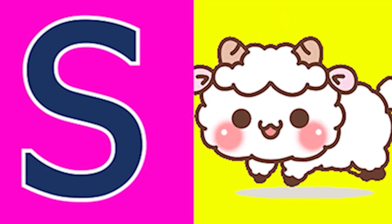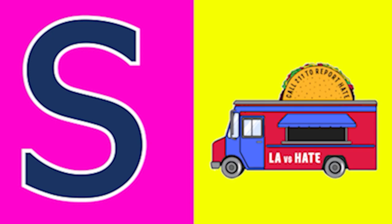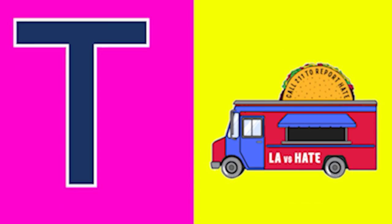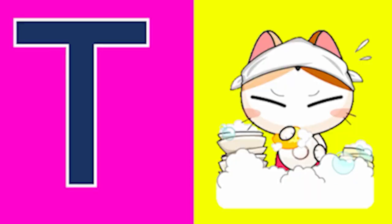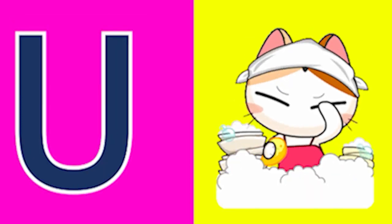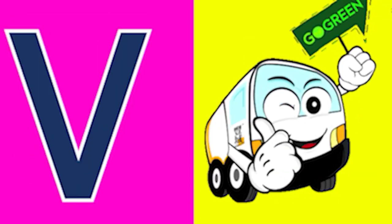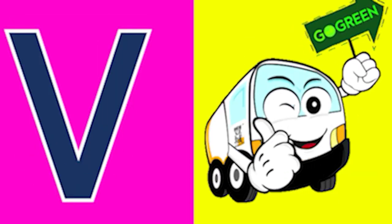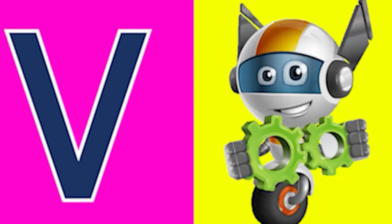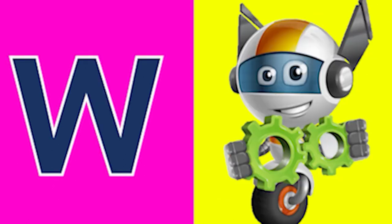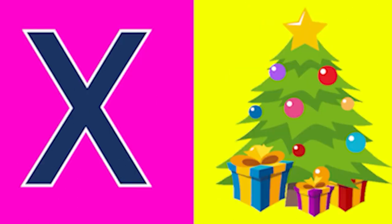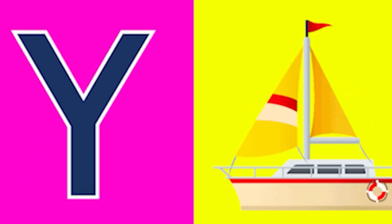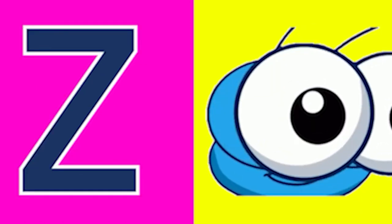S for sheep and T for top, U for utensil, V for van, W for wheel and X for xmas tree, Y for yacht and Z for...